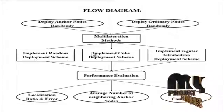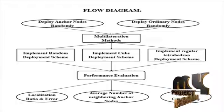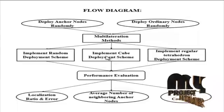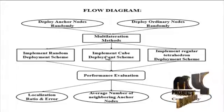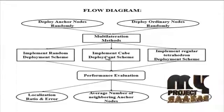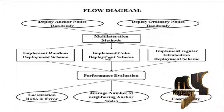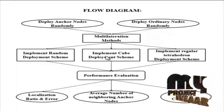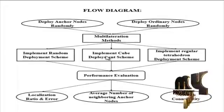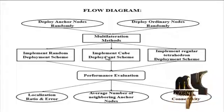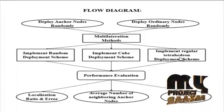In the cube deployment scheme, anchor nodes are deployed at the vertices of pre-positioned space-filling cubes. In the regular tetrahedron deployment scheme, anchor nodes are deployed at the vertices of some pre-positioned regular tetrahedrons. Among all kinds of regular polyhedrons, the cube is the only space-filling regular polyhedron.